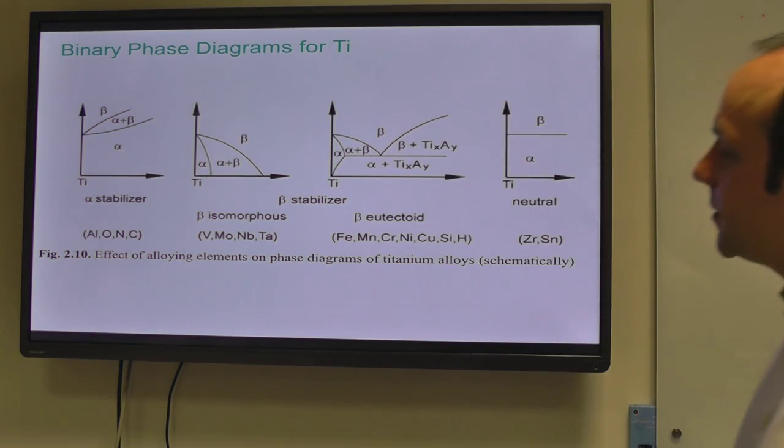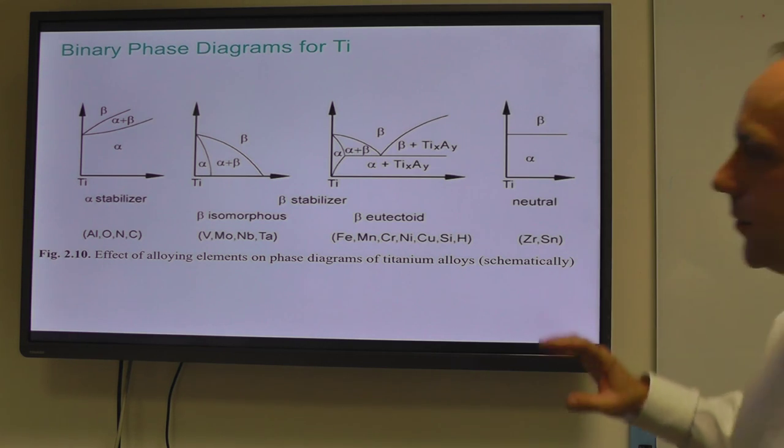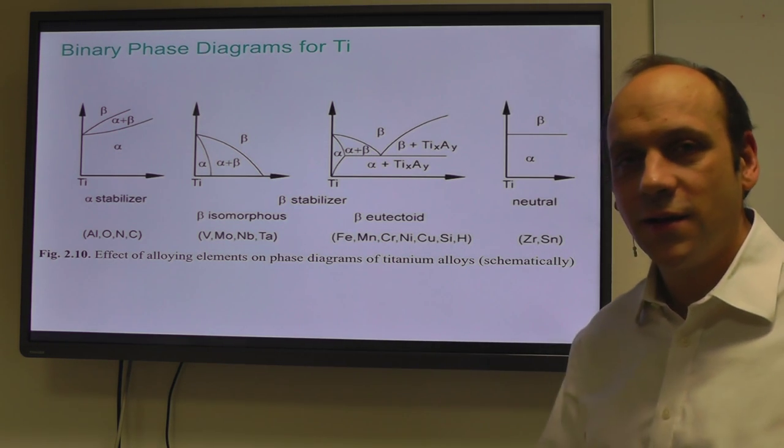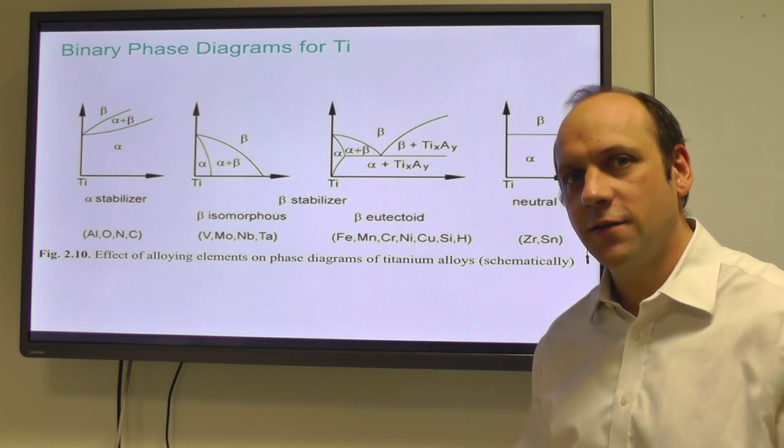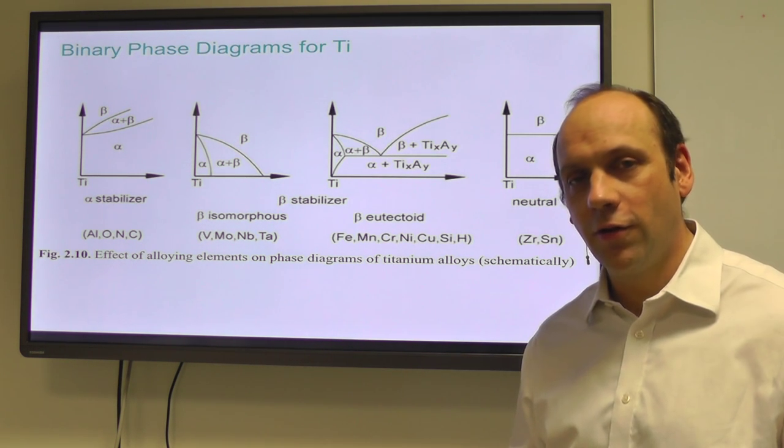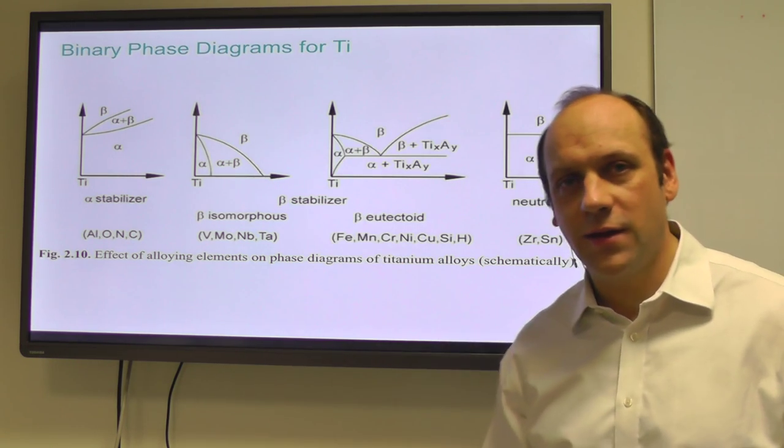Now we talked about the binary phase diagrams a moment ago, and we talked about the different stabilizers. Now we've got an idea of the microstructures and the crystallography, now it's time to come back to those phase diagrams and have a look at what they really look like, rather than these schematics.